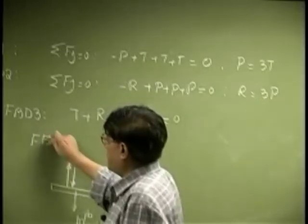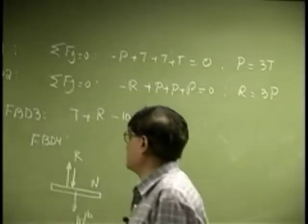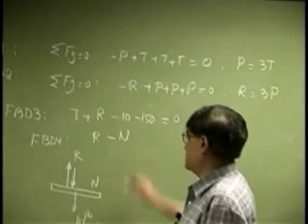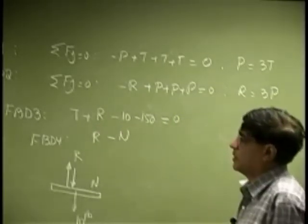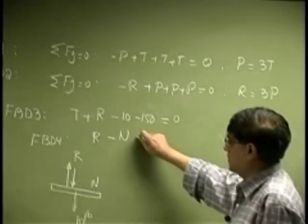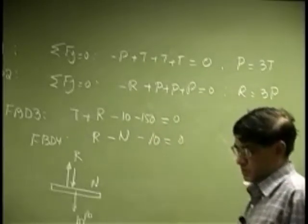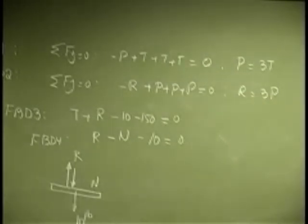Then you have one more equation that is going to come from free body diagram 4. That should be R is going up, the reaction force at the plank is going down, then you have another force 10 going down, and that should be 0.